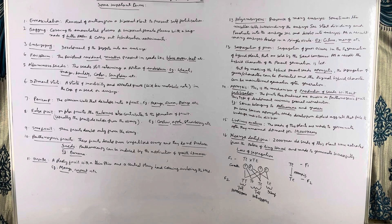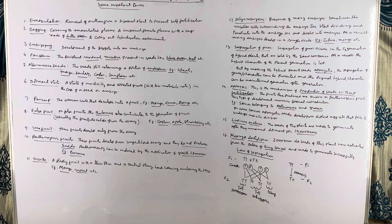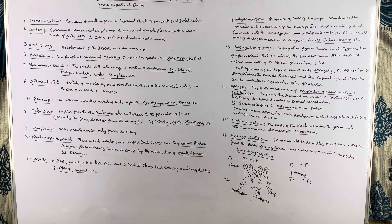Bagging means covering the emasculated flowers or unisexual female flowers before they open, with a bag made of butter paper. This prevents unwanted cross-fertilization. Embryogeny means development of a zygote into an embryo.